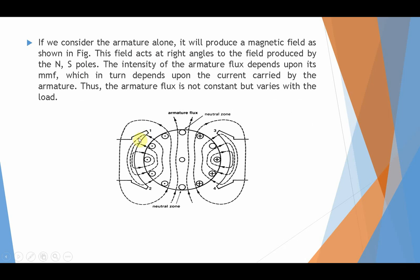Suppose a figure in which we consider armature flux alone, meaning there is no flux generated from the magnetic field. For simplicity, we consider only the armature flux. If we consider the armature alone, it will produce a magnetic field as shown in the figure. This field acts at right angles to the field produced by the north and south poles. The intensity of the armature flux depends upon its MMF, which in turn depends upon the current carried by the armature. Thus the armature flux is not constant but varies with load.